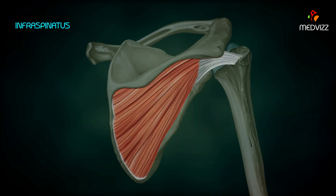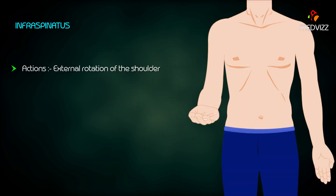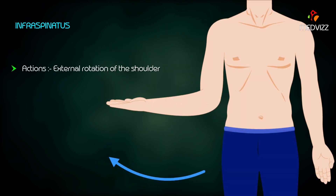Infraspinatus: It originates at the medial two-thirds of the infraspinous fossa of the scapula. It passes laterally and upwards and is inserted into the middle impression of the greater tubercle of the humerus. Its action is external rotation of the shoulder.